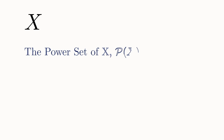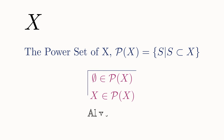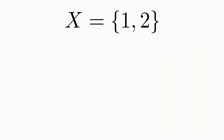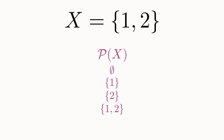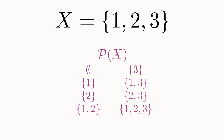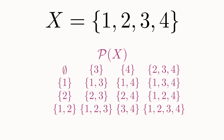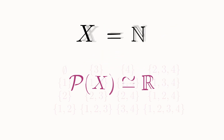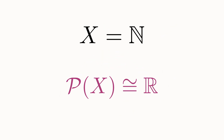Let's begin with an abstract set x. The power set of x is the collection of all possible subsets of x. Since the empty set is a subset of any set, and x is a subset of itself, the power set of x will always contain at least these two subsets. For example, if x was the set containing the numbers 1 and 2, then the power set of x would be these four subsets. If it had three elements, it would contain eight subsets. The cardinality of the power set grows very quickly as the size of the original set increases. In fact, if x is the set of all natural numbers, then its power set would be an uncountably infinite set that is isomorphic to the set of real numbers.